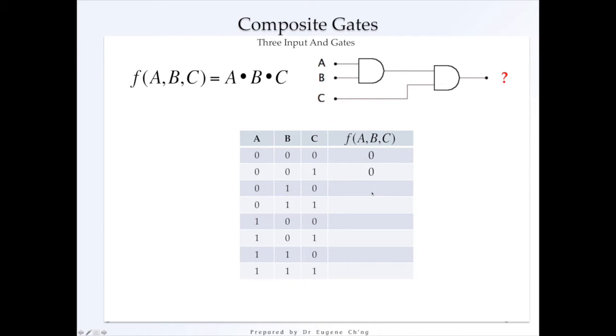So let's see. In this case, because it's AND and AND, this is also an AND gate. If 0,0,0 comes in, surely the output is 0.